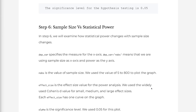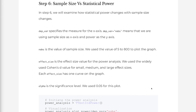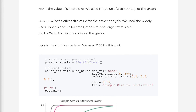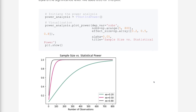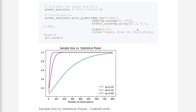In step 6, we will examine how statistical power changes with sample size. dep_var specifies the measure for the x-axis; dep_var equals nobs means we are using sample size as the x-axis and power as the y-axis. nobs is the value of sample size — we use values from 5 to 800 to plot the graph. We use the widely used Cohen's D values for small, medium, and large effect sizes, each producing one curve on the graph. Alpha is set to 0.05. From the graph, we can see that statistical power increases with sample size, and to achieve the same power, we need more samples to detect a smaller effect size.